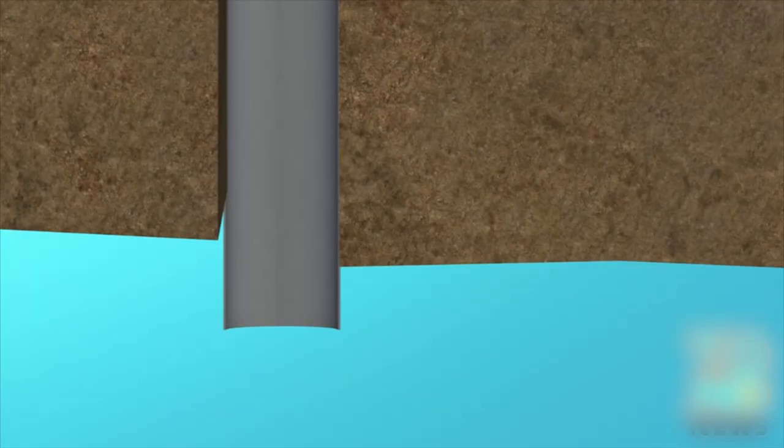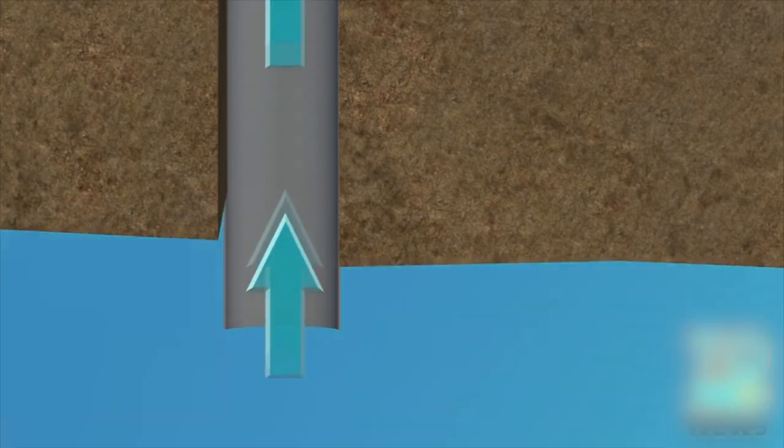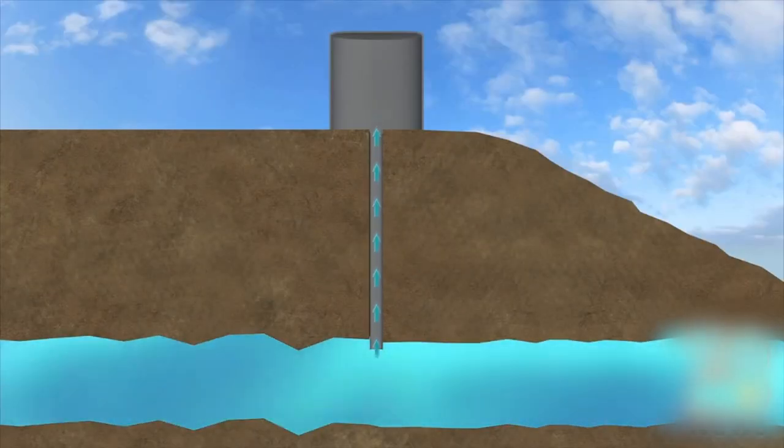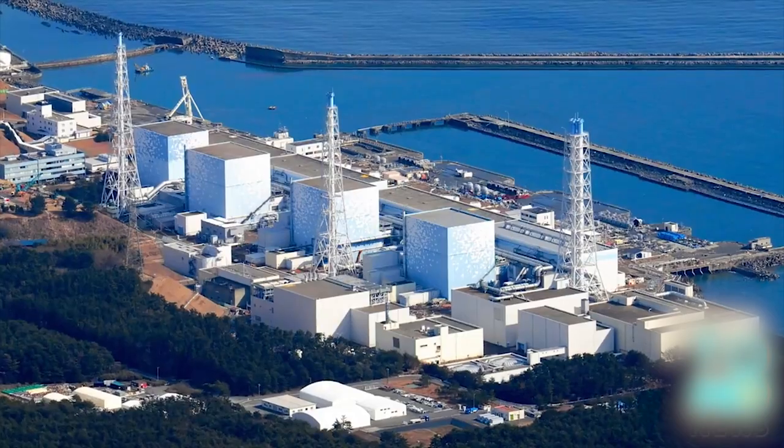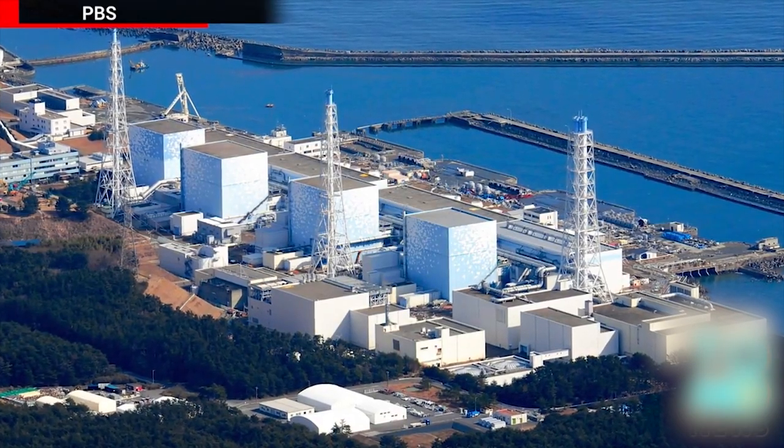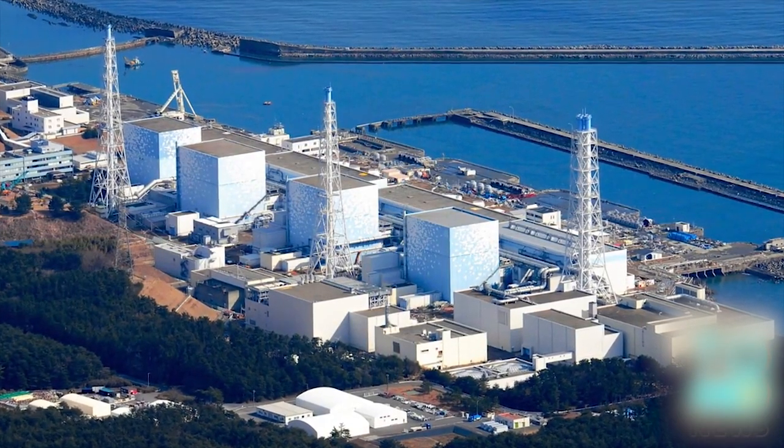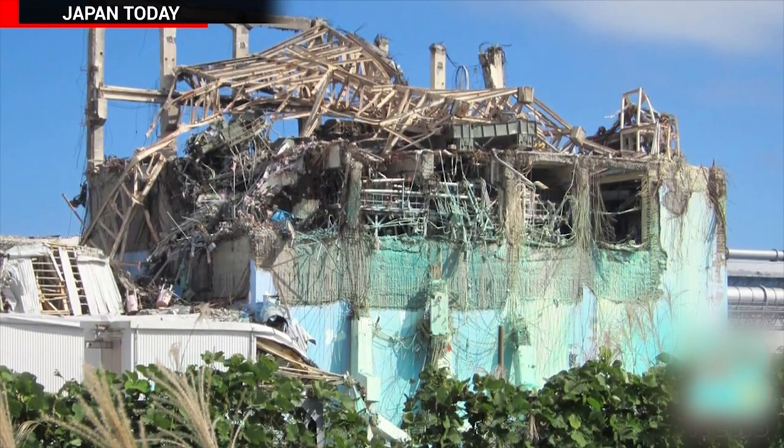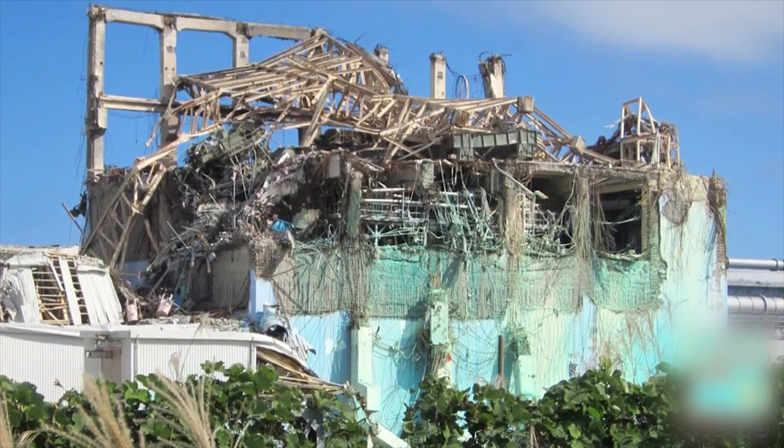Groundwater around the plant has been pumped out of the earth and treated for radioactivity for years. Then there are fears some of the recently leaked water may have entered the groundwater. Hundreds of tons of radioactive water have however leaked into the ocean since 2011, and radiation concentrations in regional groundwater and seawater are still currently above acceptable levels.